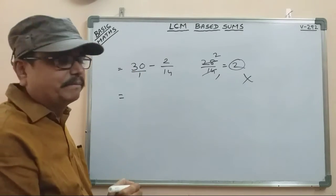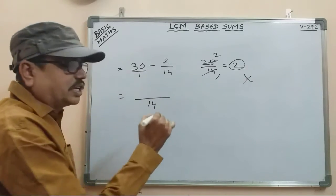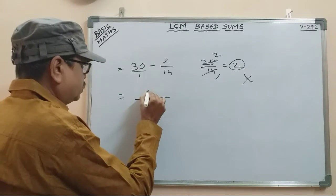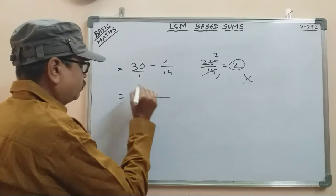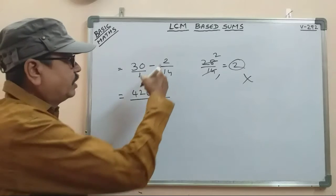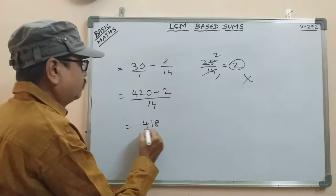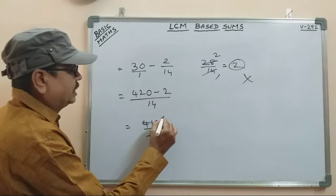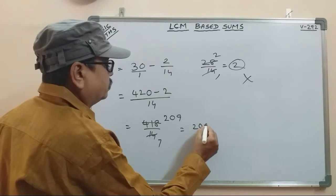LCM 14 times: 14 into 30. 14 into 0 is 0, 14 into 3 is 420. 420 minus... 14 into 40 one time. So 1 into 2 is 2. Here we go: 418 by 14. Using 2 table cancel: choose 2, 1, 2, 7, 2, 2, 0, 9 — giving 209 by 7.